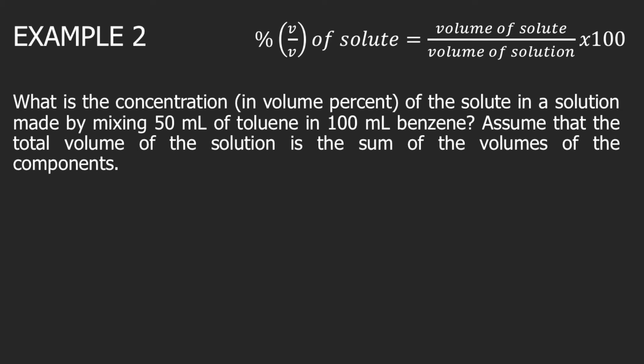What is the concentration of the solute in a solution made by mixing 50 mL of toluene in 100 mL benzene? Assume that the total volume of the solution is the sum of the volumes of the components. We are given two components: toluene and benzene. How do you know which one is the solute and which one is the solvent? You look at the amount — 50 mL versus 100 mL. In general, the solute is the one present in smaller amount, so toluene is our solute. The solvent is the one present in greater amount, so benzene is our solvent.